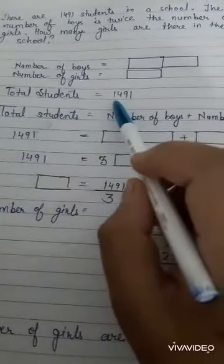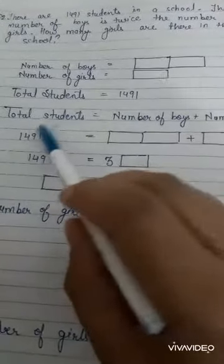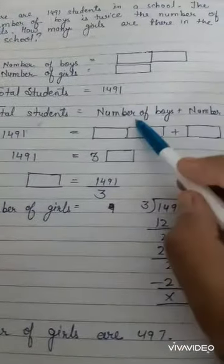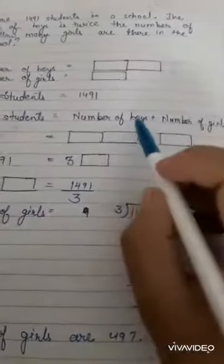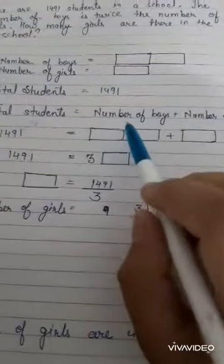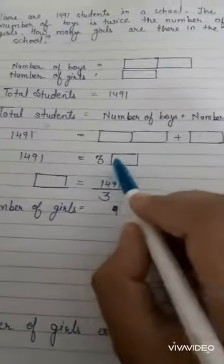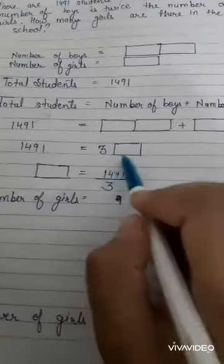So total students are 1491, and total students will be equal to number of boys plus number of girls. So it will become one, two, three - it will become three times. So three of this box is equals to 1491.